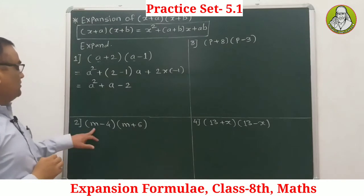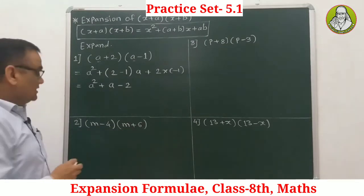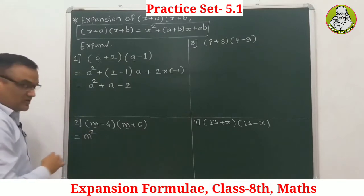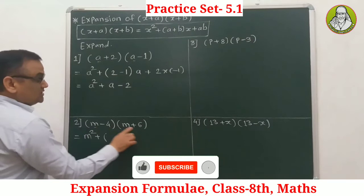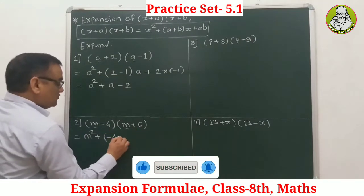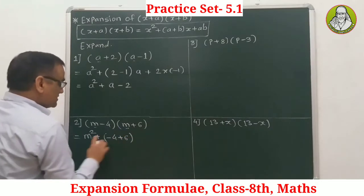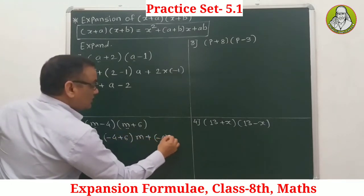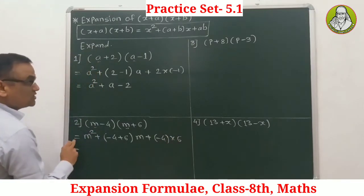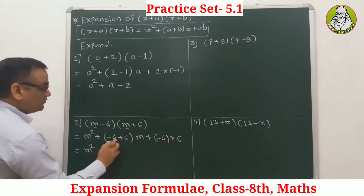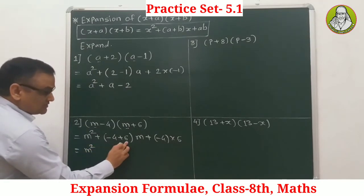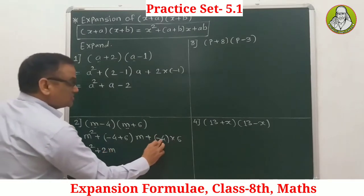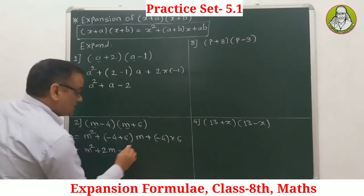Example 2: (m - 4)(m + 6). Equal terms are 'm', so m squared. Unequal terms are -4 and +6. Different signs, so we subtract: 6 - 4 = 2, and the larger sign is positive, so +2m. Multiplication: negative into positive = negative, 4 × 6 = 24, so -24. Answer: m² + 2m - 24.